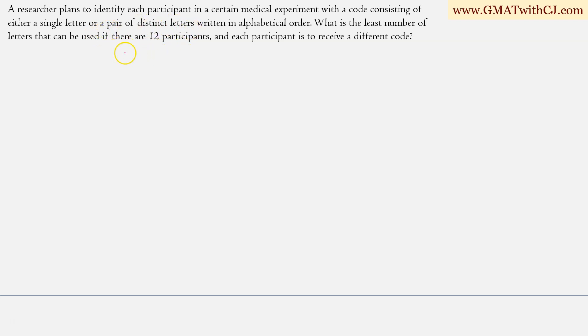So I can have a code A, B, C. These are distinct codes or I can have a pair of distinct letters. The letters cannot be same written in alphabetical order and they also need to be written in alphabetical order and it's a pair. So the code consists of two distinct letters.